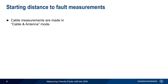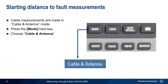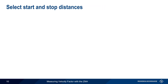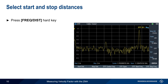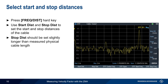On the ZNH, distance-to-fault measurements are made in Cable & Antenna mode. To enter this mode, press the Mode hard key on the front of the ZNH, and then choose Cable & Antenna from the list of available on-screen options. Next, press the Measure hard key and choose Measure Mode DTF. We set the start and stop distance of the cable by pressing the Frequency/Distance hard key, then use Start Distance and Stop Distance. Stop Distance should be set slightly longer than the measured or known physical cable length.